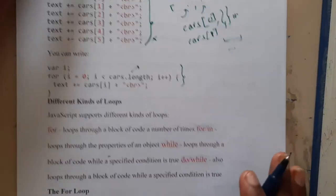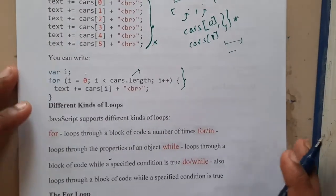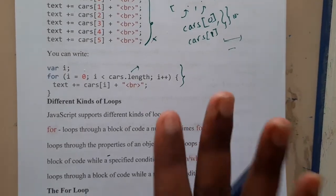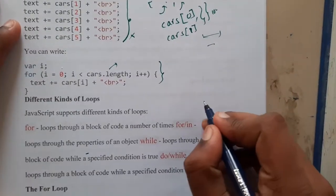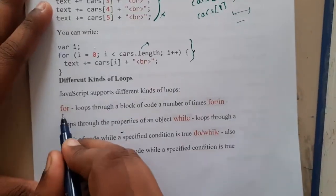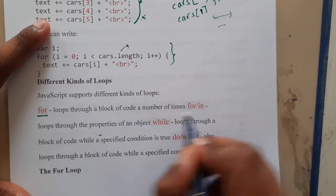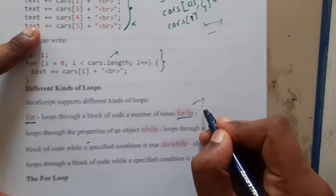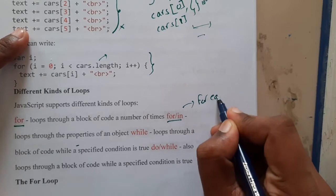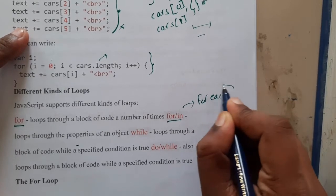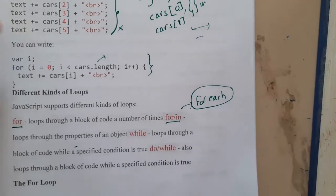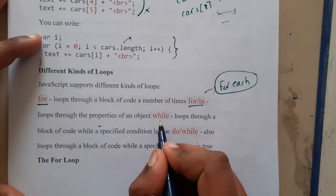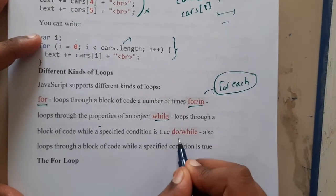In this lecture we will be discussing mainly four types of loops. The first type is the 'for' loop. The second type is 'for in', popularly called the 'forEach' loop in most programming languages. Similarly, we will be talking about the 'while' loop and the 'do-while' loop.